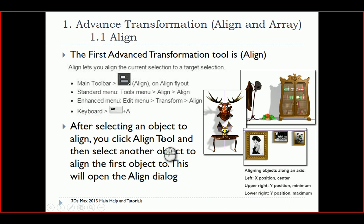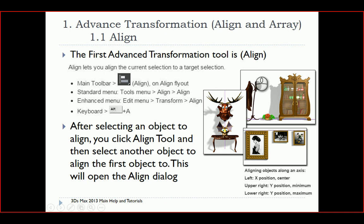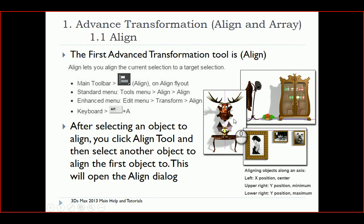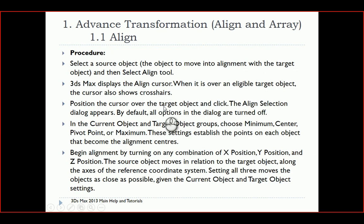First, advanced transformation. In this part I'm going to show you two more transformers. You know that in the beginning we saw the basic transformers — move, rotate, and scale — and then mirror. Now we have align and array. Align is a really important transformer that allows you to put things aligned based on the existence of a specific line, where you can put that line in the middle or center of objects.